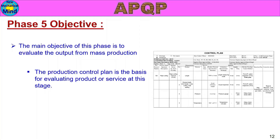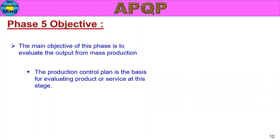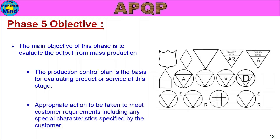The process is defined to meet customer requirements, including any special characteristics specified by the customer. When evaluated, the parameters take into account the customer requirements. Following this activity is very important for meeting customer specifications. This is Phase 5's main objective.